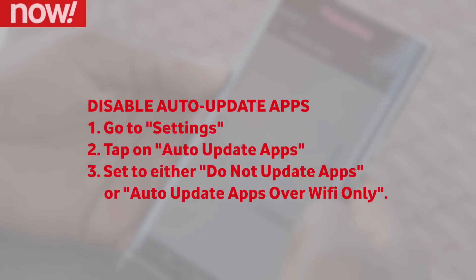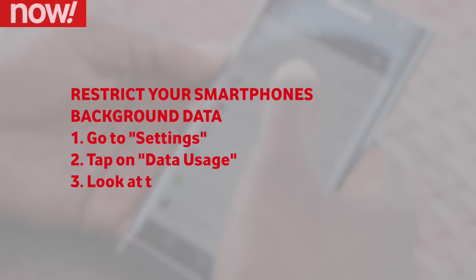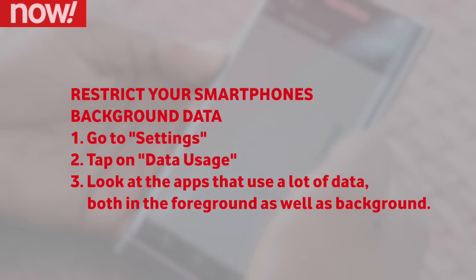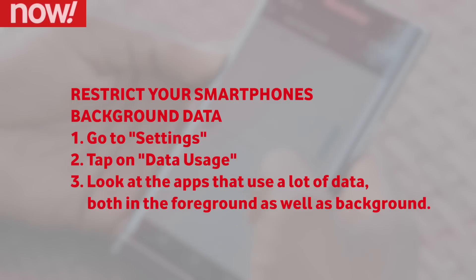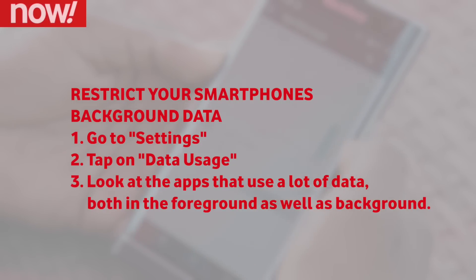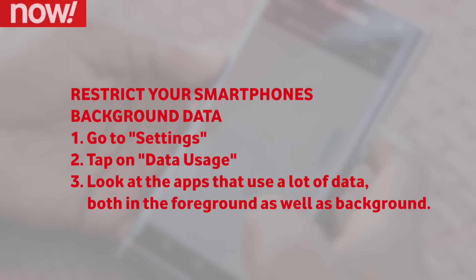Lastly, you'd want to identify and limit high-consuming apps. In Settings, tap Data Usage. You can then take a look at any apps that are consuming the most data in the foreground and background. This can really be useful in knowing which apps you should restrict.